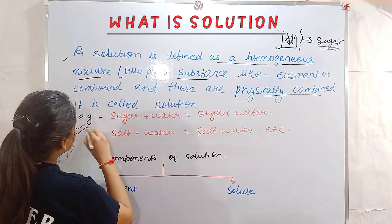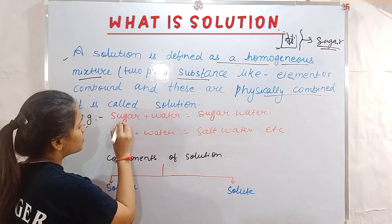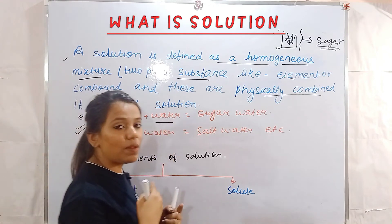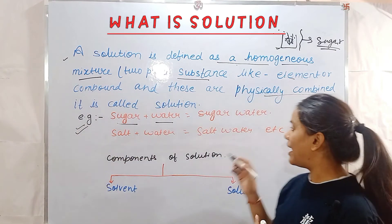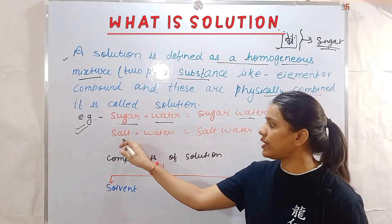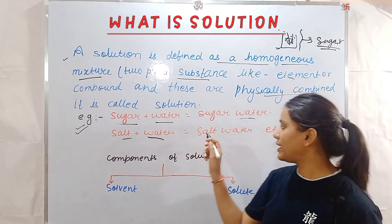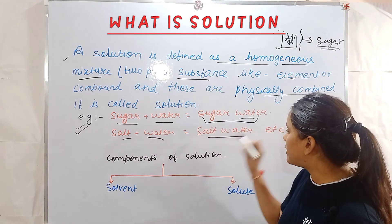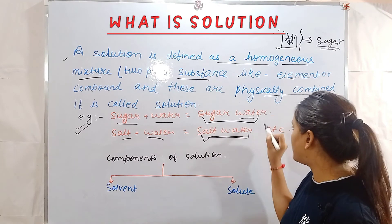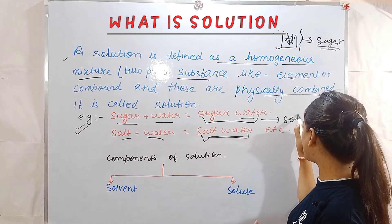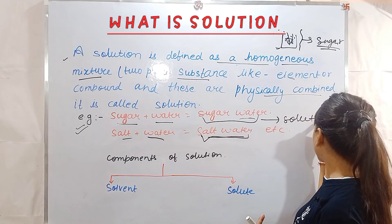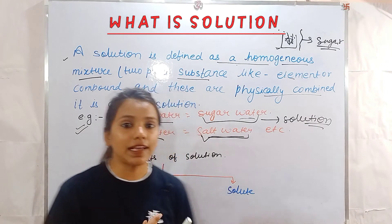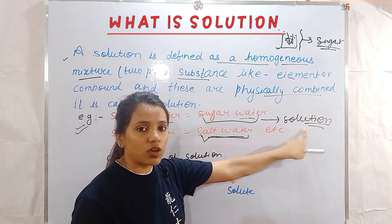If we talk about examples: if you mix sugar and water, you get sugar water. If you mix salt and water, you get salt water. These are solutions — two components that are physically combined.